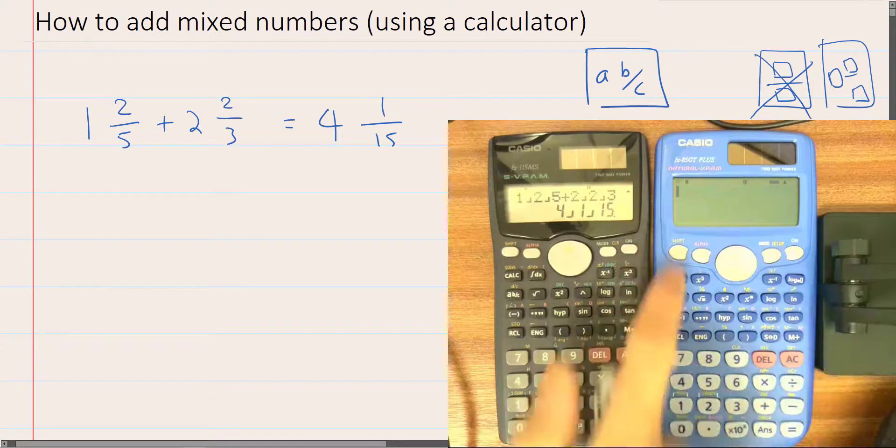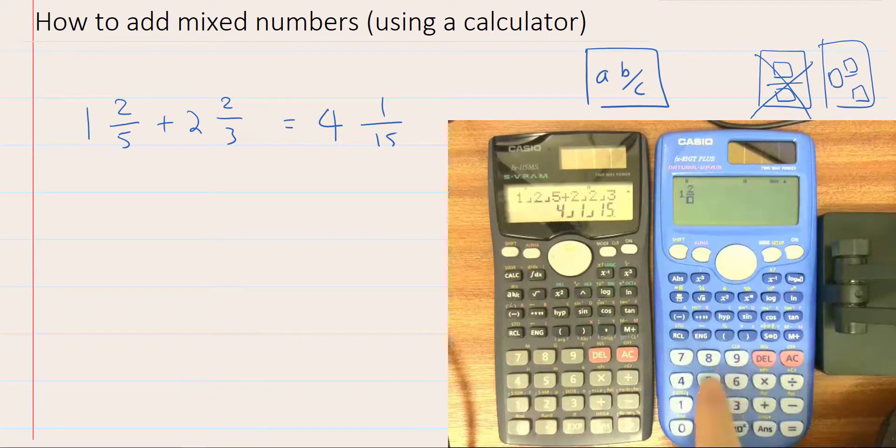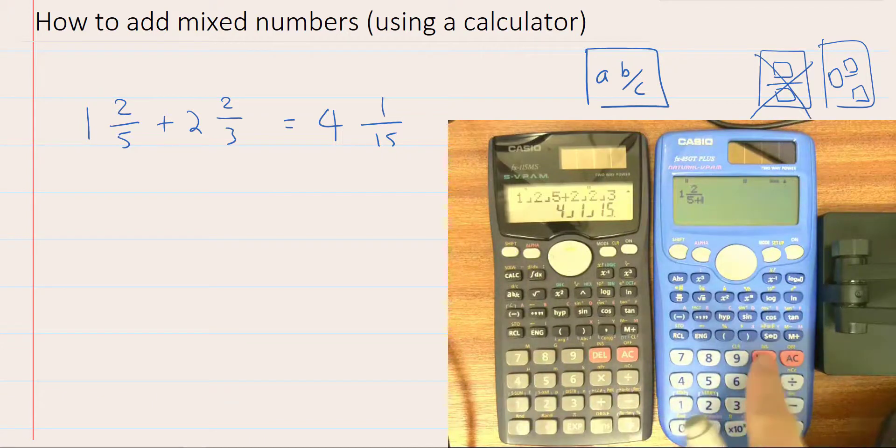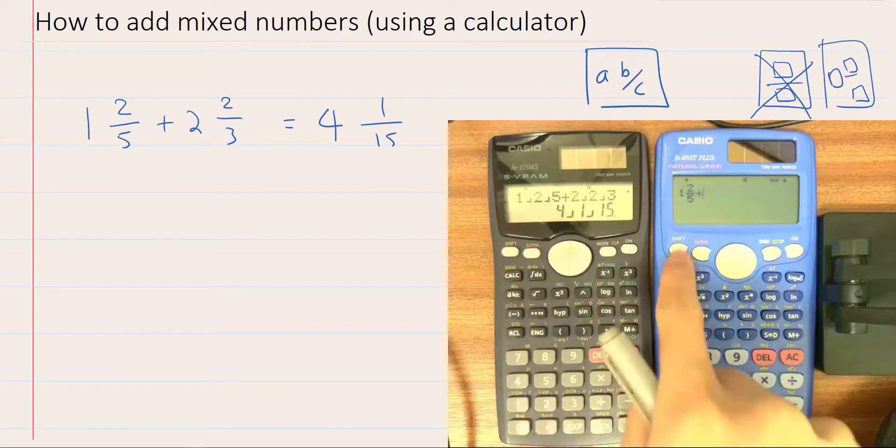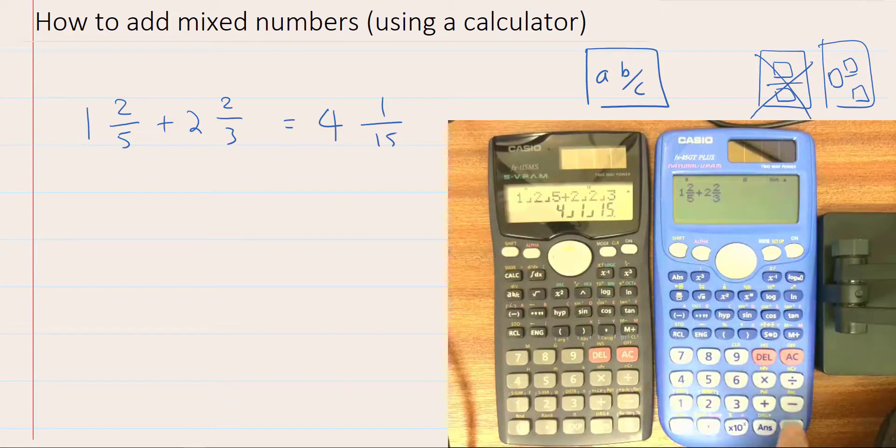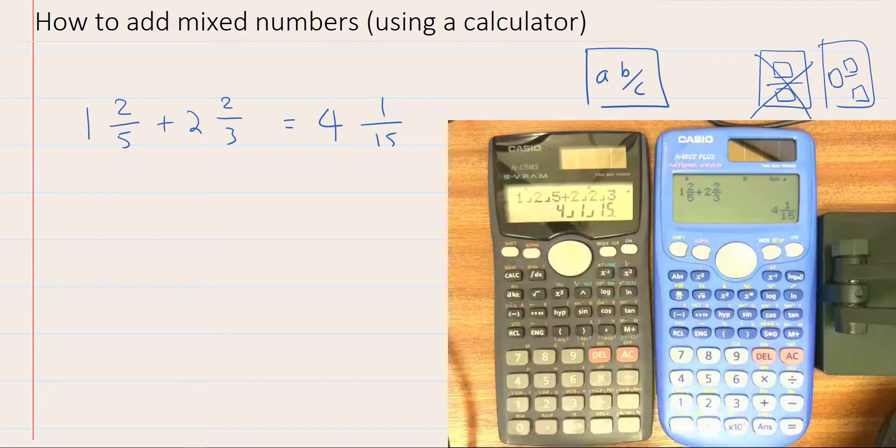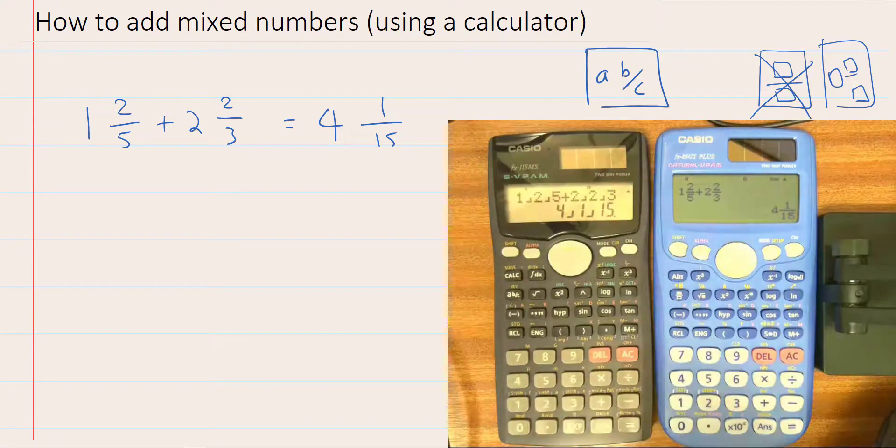So if we use that, we can get that there. So 1 and 2 fifths plus 2, 2 thirds. 4 and 1 15th.